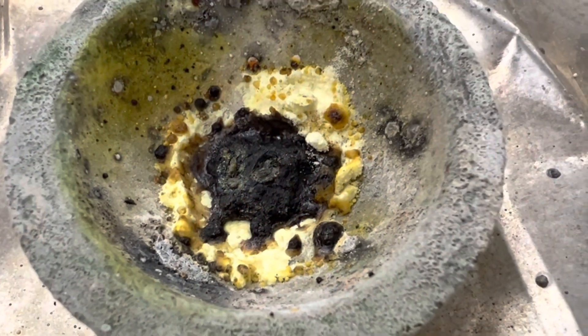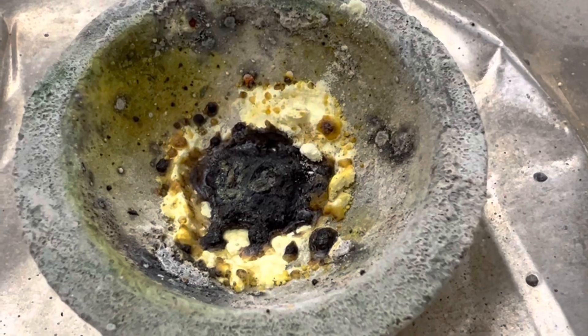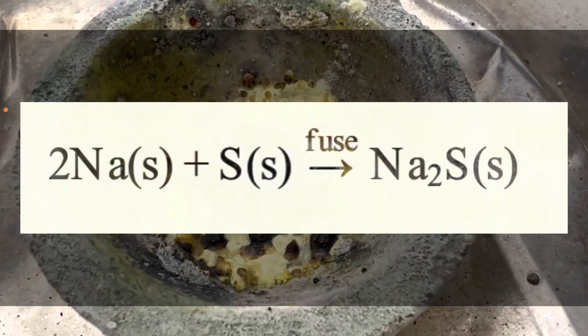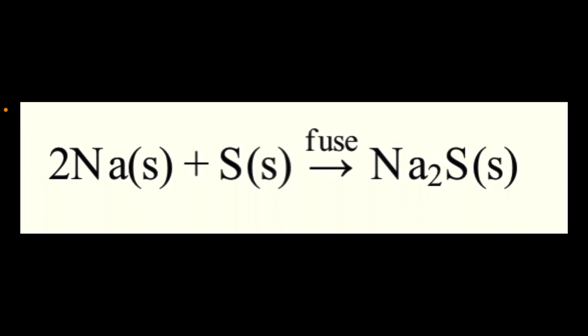The product in this reaction is called sodium sulfide. So what happened in this amazing exothermic synthesis reaction is we started with elemental sodium, that was the silver metal that we cut, and we combined that with sulfur to create the product sodium sulfide.